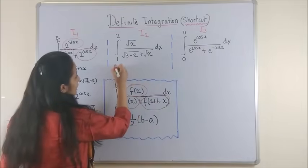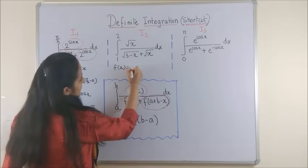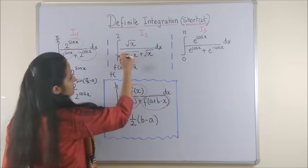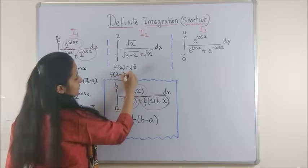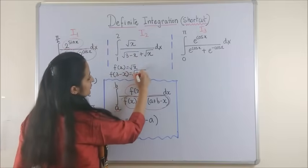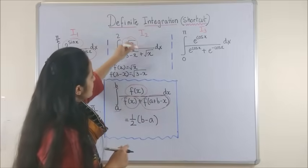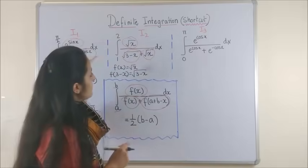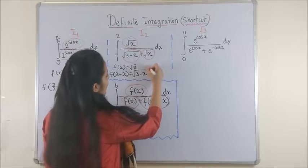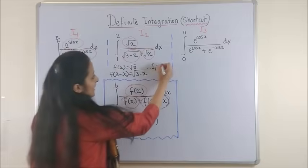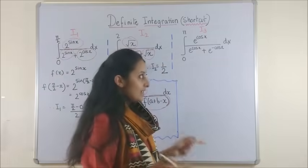Now, even for the second one, if your function is root x, then f of a plus b minus x, that means 3 minus x should be root of 3 minus x. Well, once again, you have the function plus f of a plus b minus x. So, of course, your i2 became b minus a, that's just 1 upon 2.